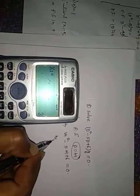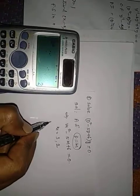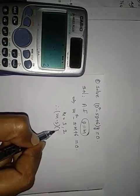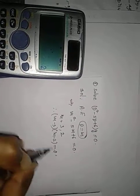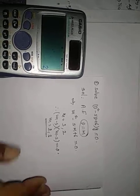So, m is equal to 3 and 2. Therefore, m minus 3 into m minus 2 is equal to 0. That is equal to m is equal to 2 and 3. These are the roots.